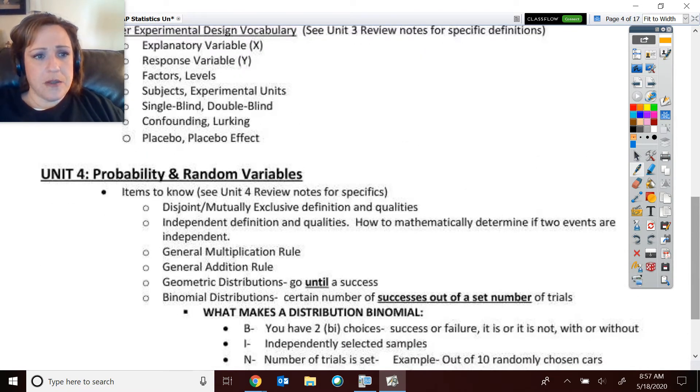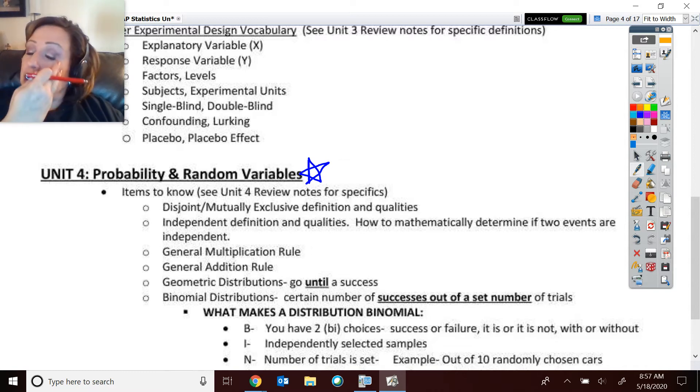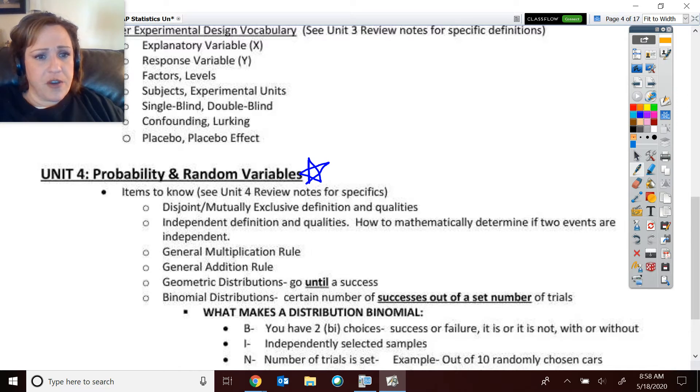Next, unit four. So here we have some, it's probability and random variables. And I was just thinking before I started this, I think I might have left off something about combining random variables. I'll look and see if I included that. Hopefully, I did. If not, it's definitely detailed in the unit four individual summary. So here we go. So we've got our laws and vocabulary about being disjoint, mutually exclusive, what that means, no overlap, independent.